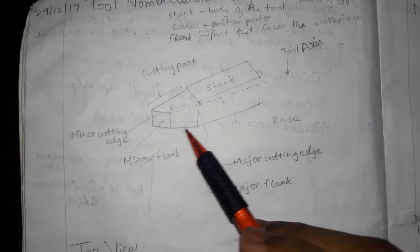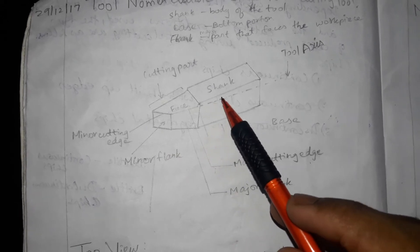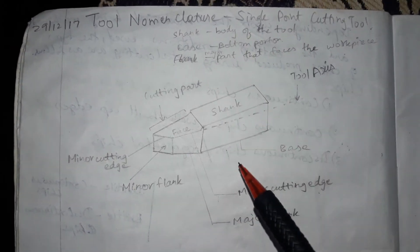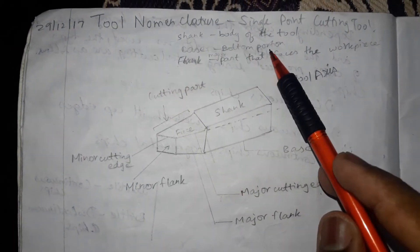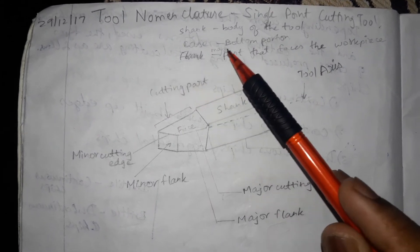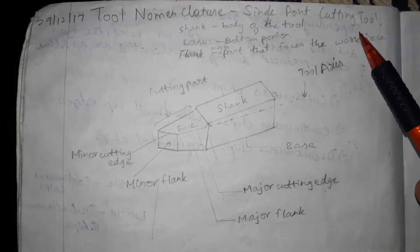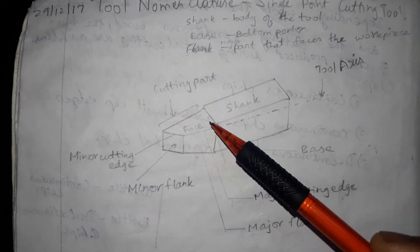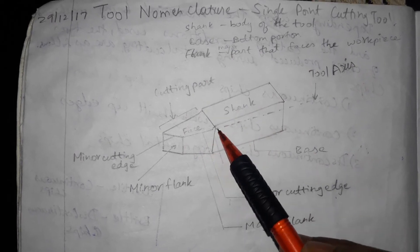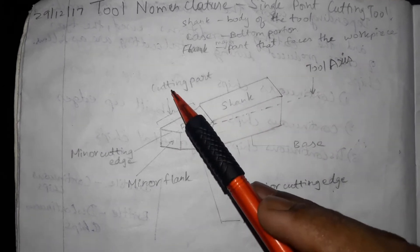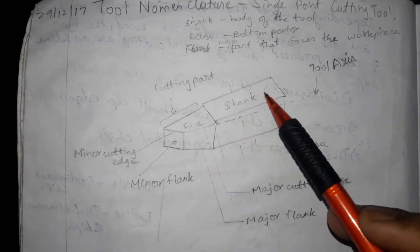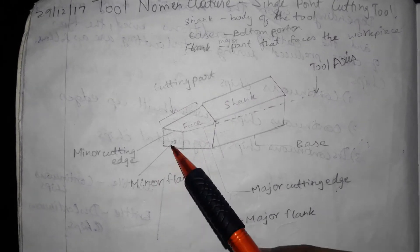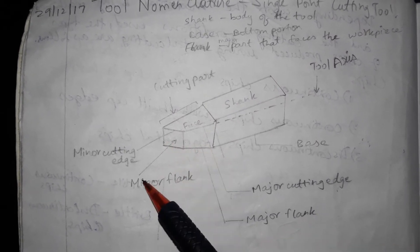This is the diagram of the single point cutting tool. The shank is the body of the tool — the base bottom portion. The flank is the major part that faces the workpiece. This is the tool axis, which is the cutting part. This is the minor cutting edge and the minor flank.